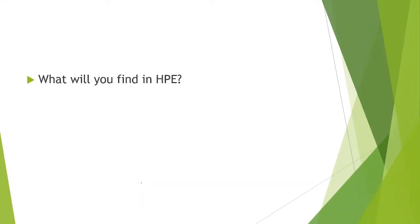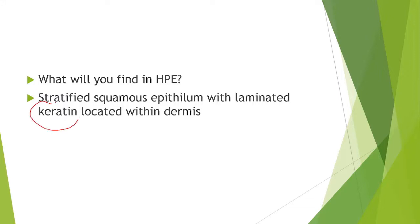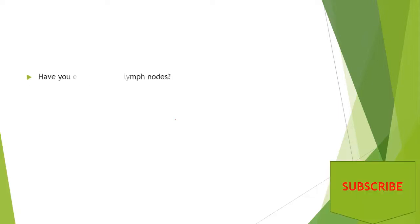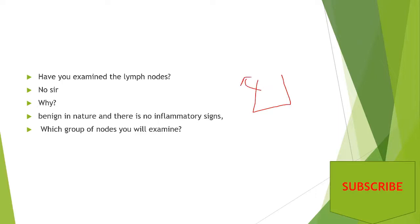A question may ask what you will find in histopathology examination in excisional biopsy: that is stratified squamous epithelium with laminated keratin. The material content is keratin, and the lining is stratified squamous epithelium of the skin, found within the dermis - these are three important points. Regarding lymph nodes: this swelling is benign in nature with no inflammatory signs, but if the examiner asks, the back drains to the axillary lymph nodes, so you examine the axillary lymph nodes.